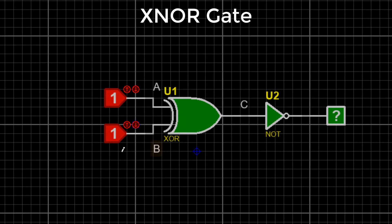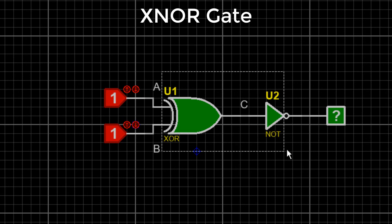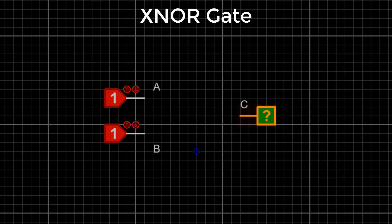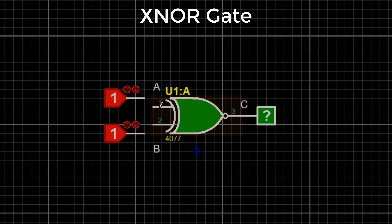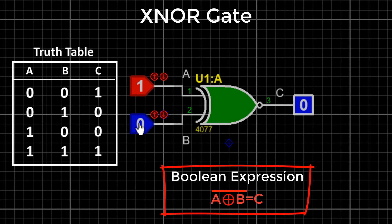XNOR gate: If we add a NOT gate at the output of the XOR gate, we call it the XNOR gate. It works the same as the XOR gate but gives an inverted output. The XNOR gate gives a low output — zero — when both inputs are not the same, and gives a high output when both inputs are the same. I hope you understood the functions of all logic gates.